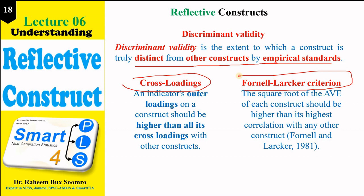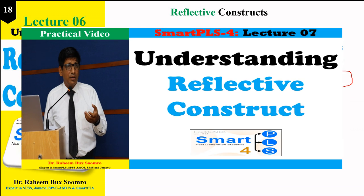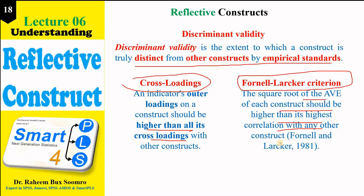For discriminant validity, there are two tools: cross-loadings and the Fornell-Lacker criterion. The indicator's loading on its own construct should be higher than all its cross-loadings. In the case of the Fornell-Lacker criterion, the square root of the AVE of each construct should be higher than its highest correlation with any other construct. For a practical assessment of cross-loadings, Fornell-Lacker, composite reliability, and Cronbach's alpha, refer to lecture number 7.